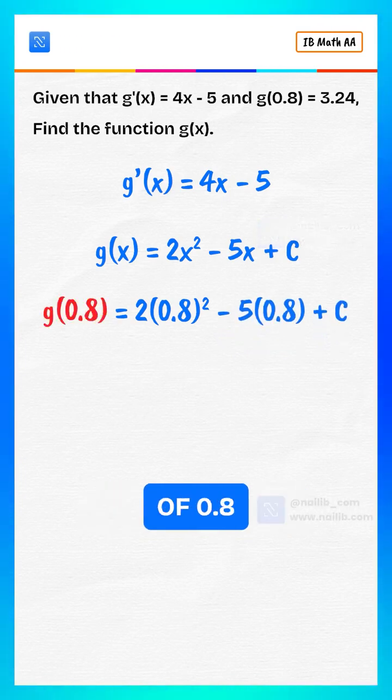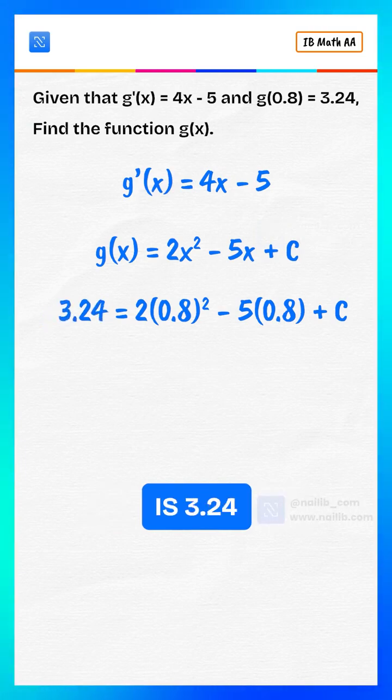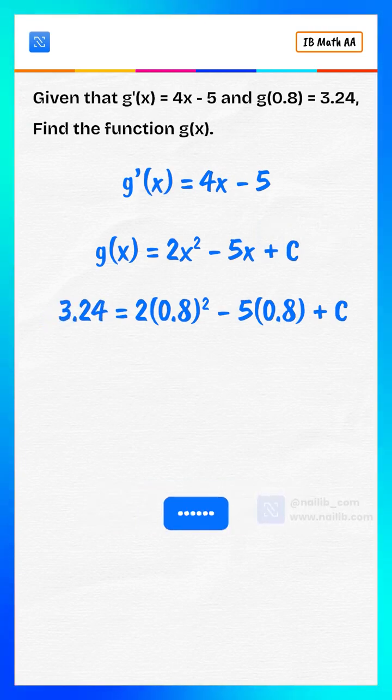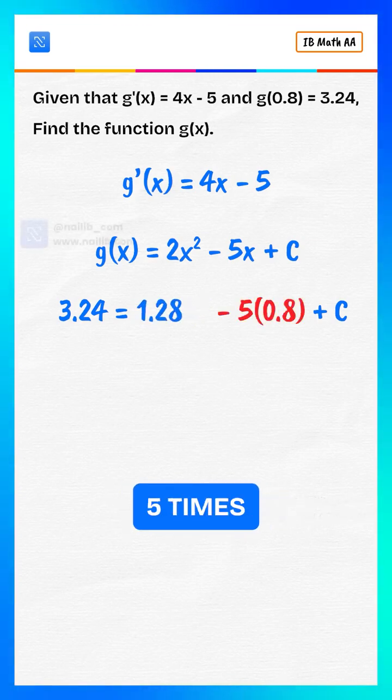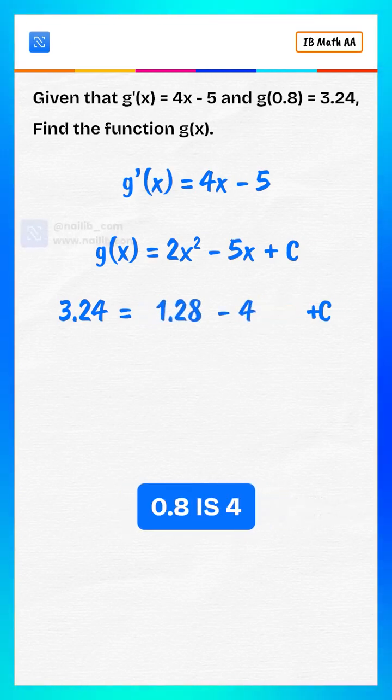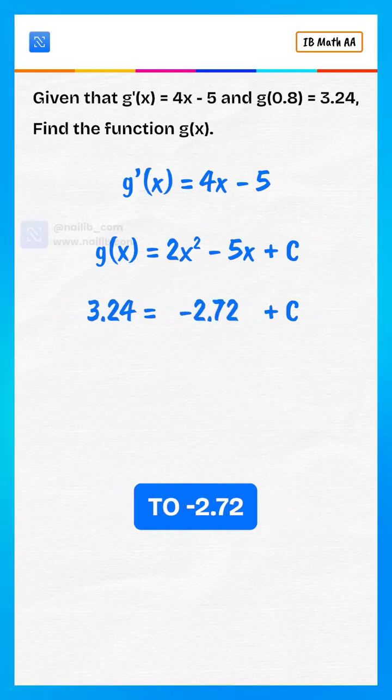The value of g of 0.8 is 3.24. 2 times 0.8 squared is 1.28. 5 times 0.8 is 4, which simplifies to negative 2.72 plus c.